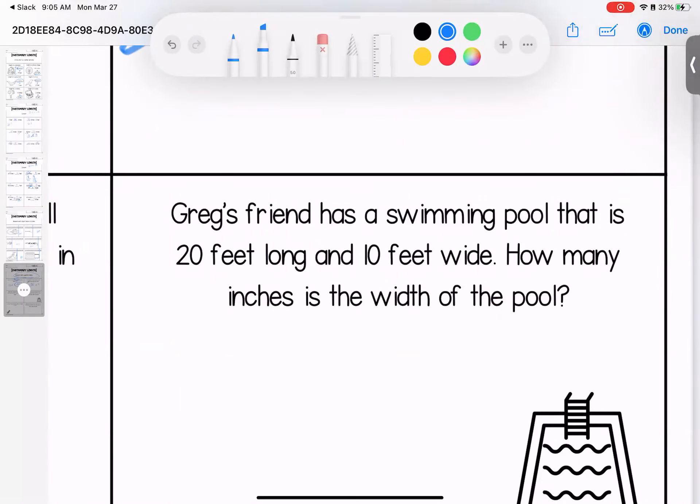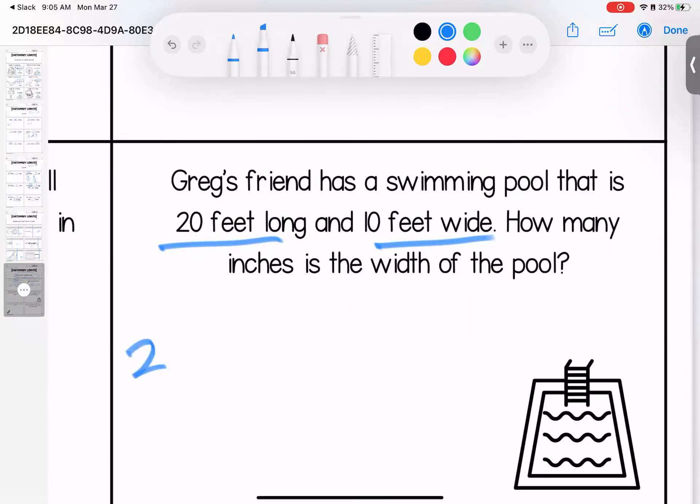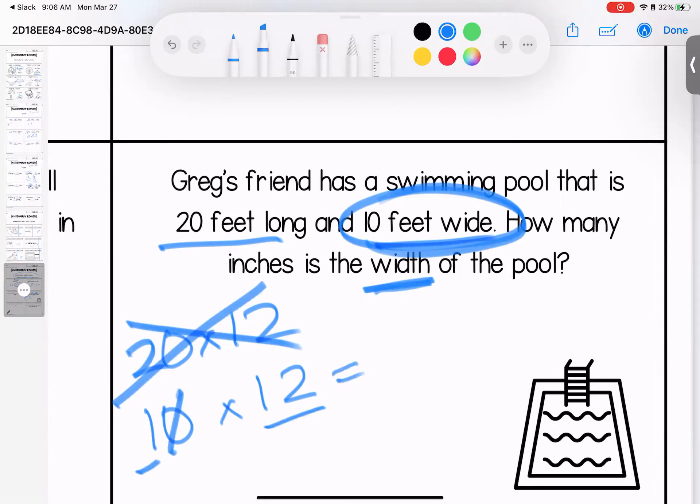Greg's friend has a swimming pool that is 20 feet long and 10 feet wide. How many inches is the width? So I have to do 20 times 12 and I have to do 10 times 12 to figure out the inches and width. But, trickster, I only want the width, which means I only have to figure out this version. Remember, we use the rhyme. Drop the zero. Find the fact. Multiply. Put the zero back. It's 120 inches. If you figured out both of them, that is okay. You would have gotten 240 inches for this.